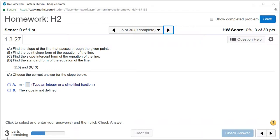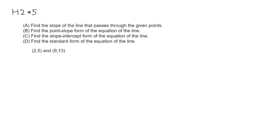Let's look at homework 2, problem number 5. We want to find the slope of the line passing through these given points. I'm going to name this x1 and y1, and this is going to be our x2 and y2.